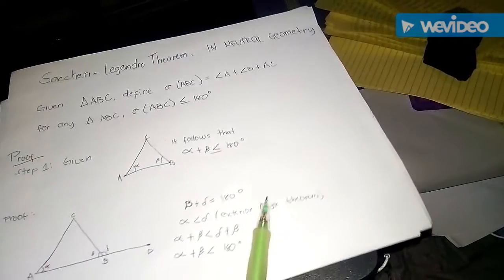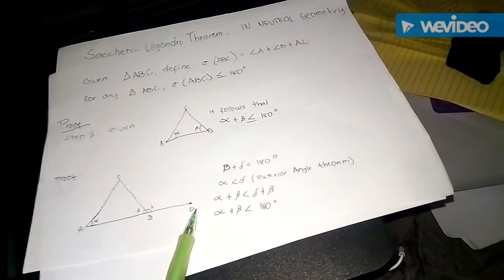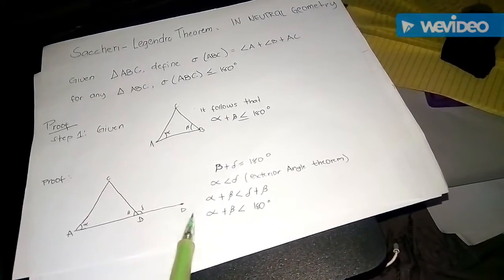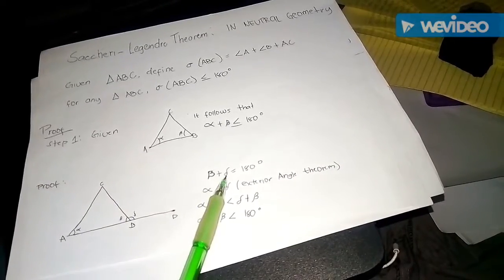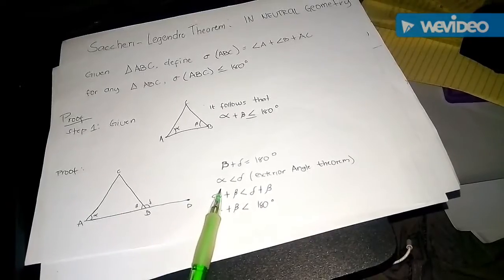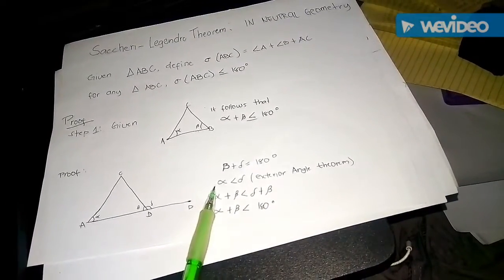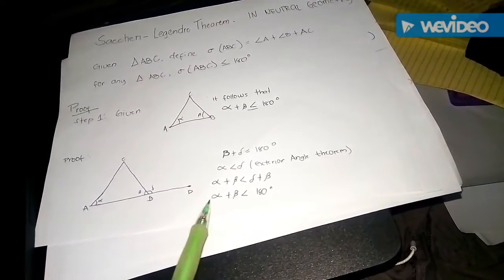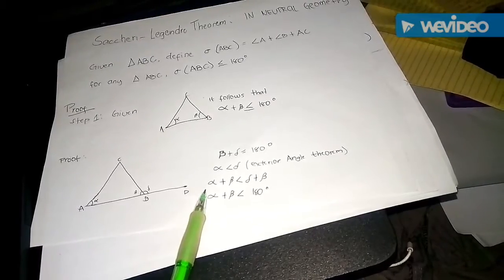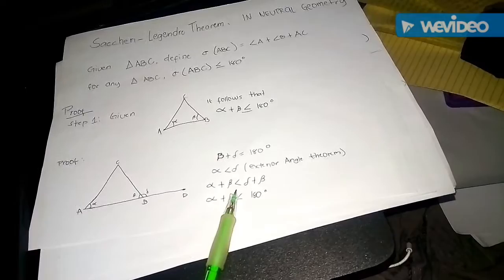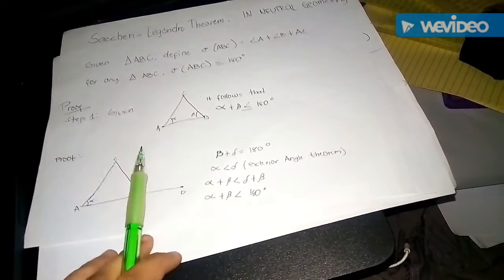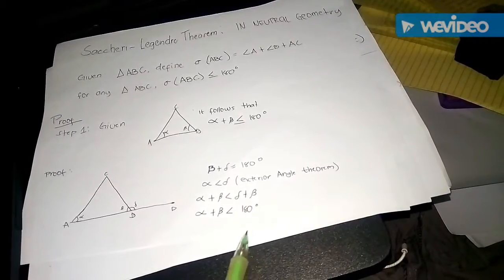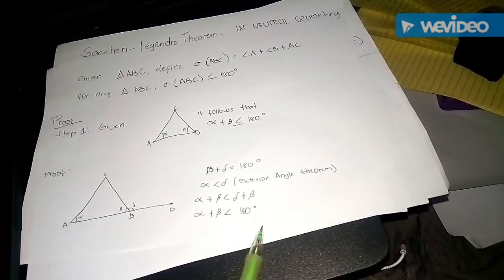Here is triangle ABC. Consider angles α and β. Extend side AB to another point D and mark the exterior angle at vertex B; call that δ. By the linear pair theorem, angle β plus angle δ equals 180 degrees. By the exterior angle theorem, angle α is less than angle δ. Adding β to both sides of the inequality: α + β < δ + β = 180 degrees. Therefore any two angles in a triangle sum to less than 180 degrees.